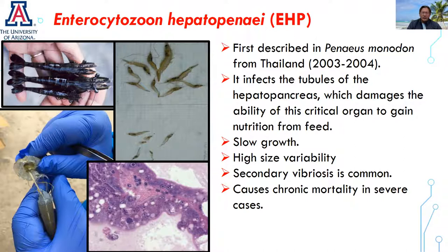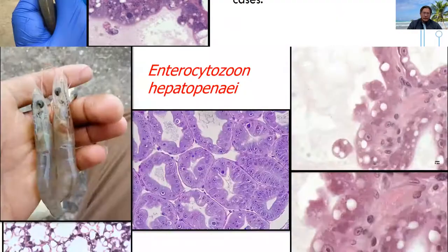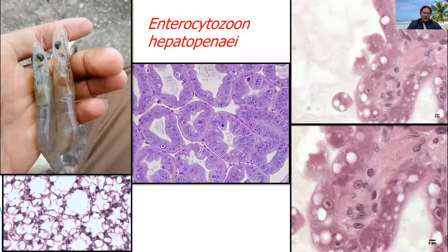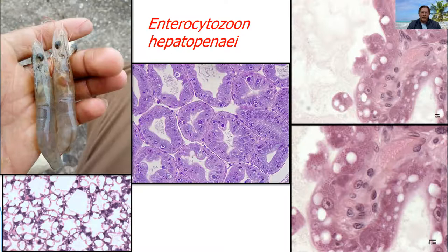Usually in the later stages of the disease, EHP has been associated with Vibrios, which are opportunistic pathogens. In some severe cases, these diseases can cause chronic mortalities in shrimp farming. Here we have a typical picture of an animal displaying EHP. You can see the typical pale discoloration of the hepatopancreas, which is also typical for other enteric pathogens such as NHP and HPND.